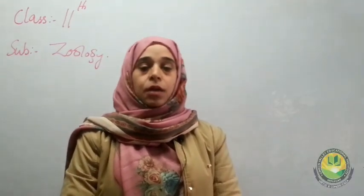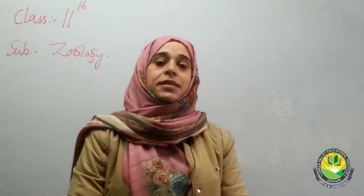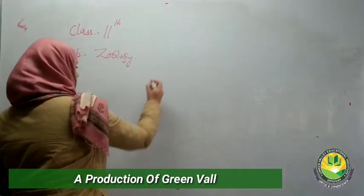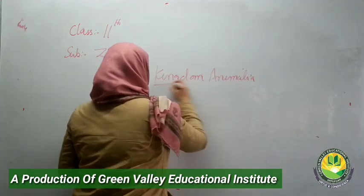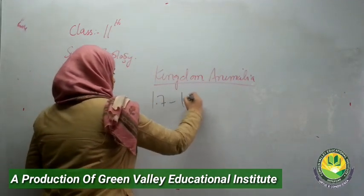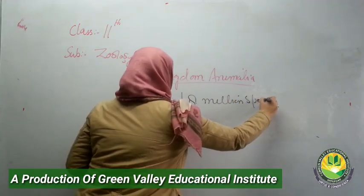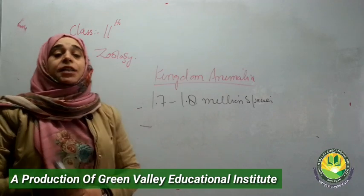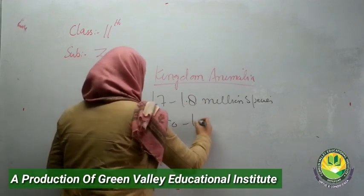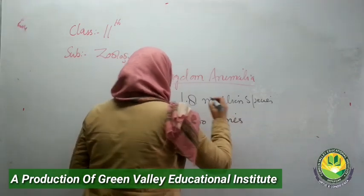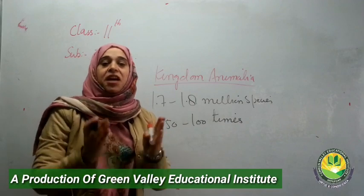Welcome to GVI Digital Classes. Today we're going to go through the basics of Kingdom Animalia. When we talk about planet Earth, there are nearly 1.7 to 1.8 million species that have been identified, named, and studied. Scientists believe the number of extinct species may exceed the living ones by 50 to 100 times, and about 15,000 new species are added every year.